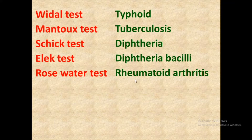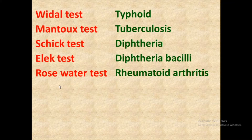For the diagnosis of rheumatoid arthritis — which is an autoimmune disease — the Rose Waaler test is used. The capital R in Rose Waaler indicates Rheumatoid arthritis. In this way you can remember: R indicates rheumatoid arthritis, and the Rose Waaler test is used for its diagnosis.